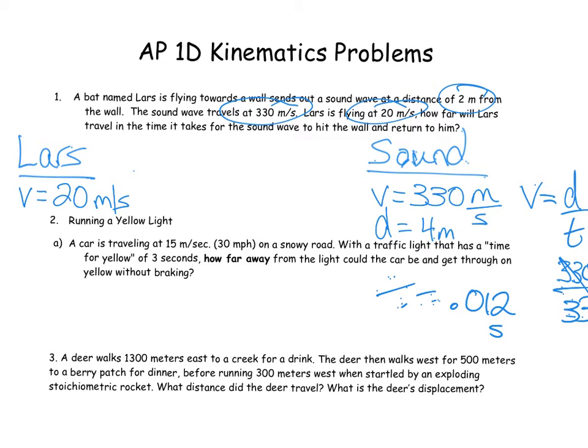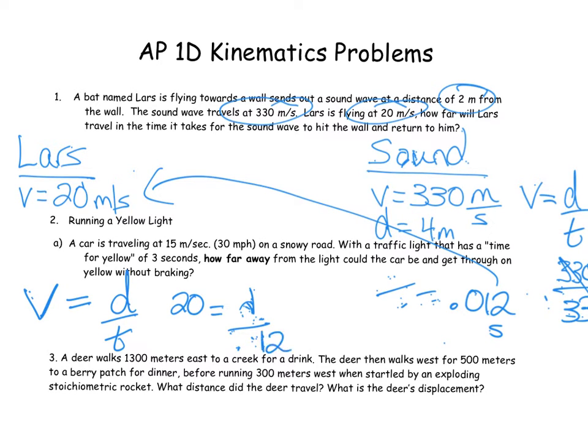That's the same amount of time that we need to look at for Lars, because this is how far along it takes for the sound to travel from Lars to the wall and back to Lars. Now we can use that same time with Lars's velocity to figure out how far it actually went. We have v equals d over t. Lars is going 20 meters per second, we're looking for the distance, and we know that the time is 0.012. Cross multiplication tells us that the distance Lars travels before the sound gets back to him is 0.24 meters.